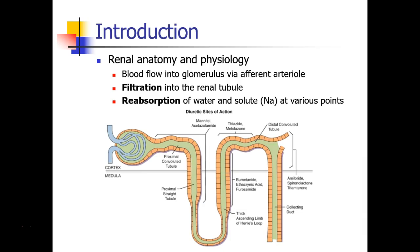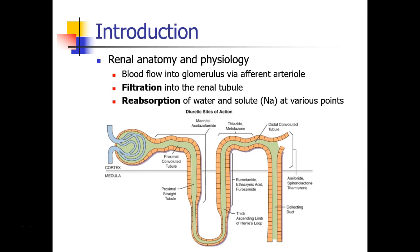A quick review of renal anatomy and physiology. Blood flows into the glomerulus via the afferent arteriole — blood comes from the renal artery into arterioles and splits into capillaries, and the capillaries exist in this glomerulus. From here blood is filtered and certain solutes are filtered from the blood into the lumen of the renal tubule. Afterwards, substances like water and various solutes, especially sodium, are reabsorbed from the renal tubule back into the kidney and then into the circulation.